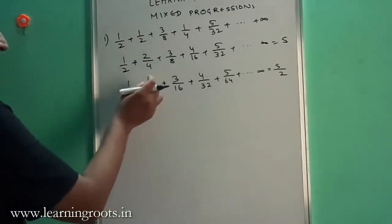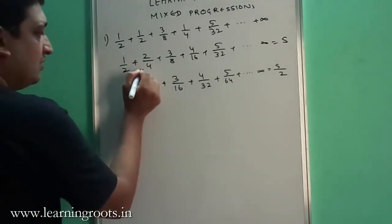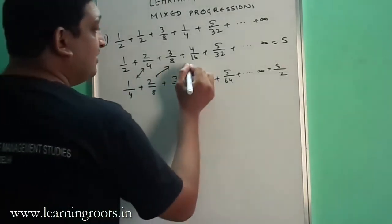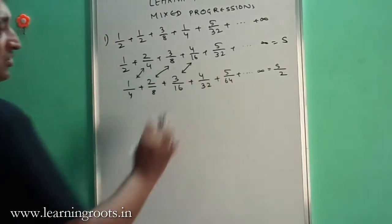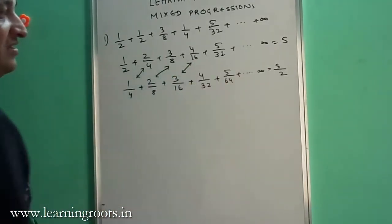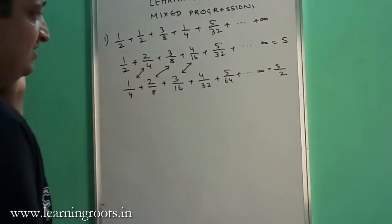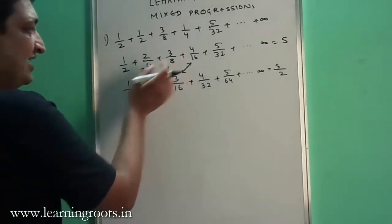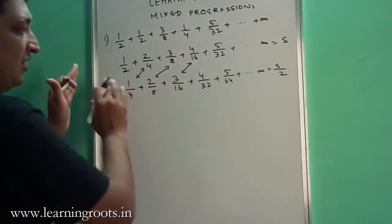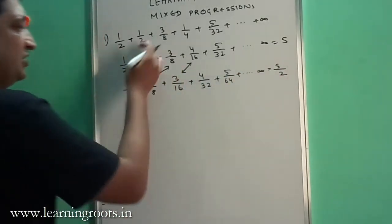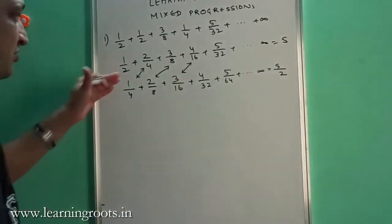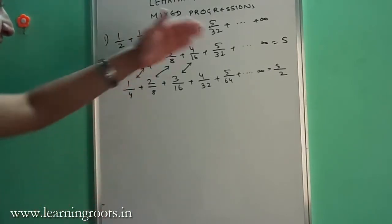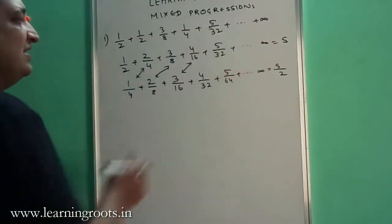Now if you look at these terms — 2/4 and 1/4, 2/8 and 3/8, 4/16 and 3/16 and so on — everywhere there will be terms which cross themselves or reduce by 1. We have used the common difference and the common ratio to arrive at something from which we can subtract the earlier equation. So we will subtract S/2 from S.